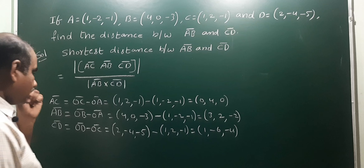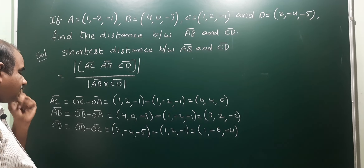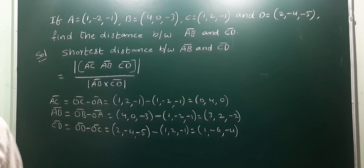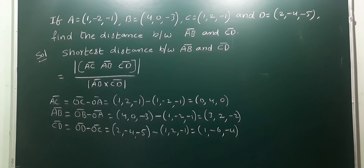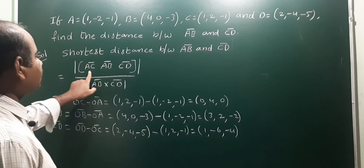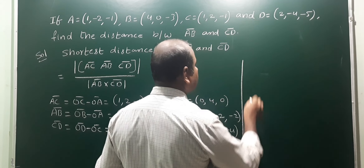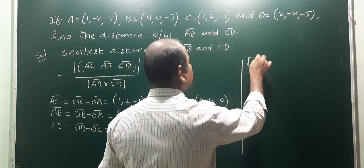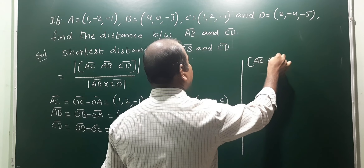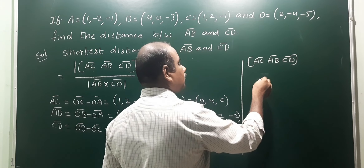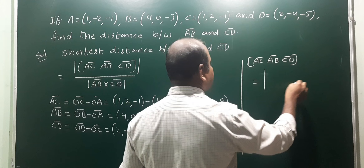So these are the vectors: AC = (0, 4, 0), AB = (3, 2, -2), CD = (1, -6, -4). Now we have to find box [AC, AB, CD]. The box product is nothing but a determinant with three rows: first row AC, second row AB, third row CD.